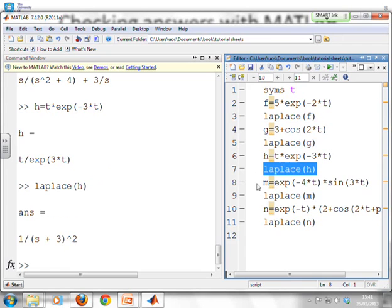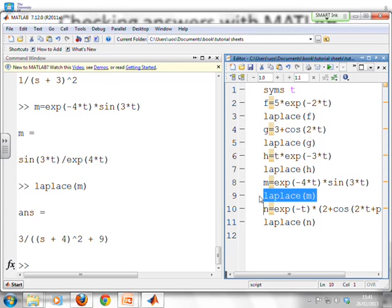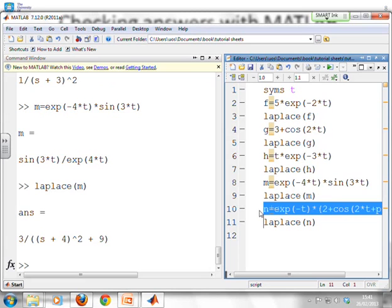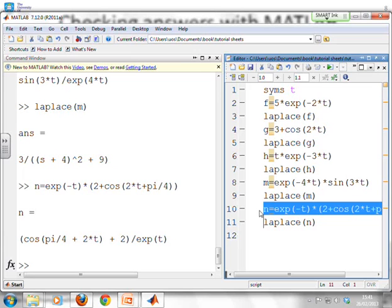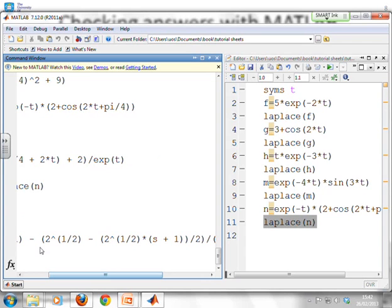What about m? That was e to the minus 4t times sin(3t). There it is. Take Laplace of m. And what do you get? 3 over (s plus 4) all squared plus 9. Exactly as we derived. And the final one, which is a bit messier, but there it is. N equals e to the minus t times (2 plus cos(2t plus pi by 4)). You can enter that. MATLAB's quite happy. Take the Laplace transform of that. And what do you get? It's stretched across the screen a bit, but you'll notice over here I've got my 2 over s plus 1. That goes from the 2 bit in the brackets. And then you'll see I've got this 2 to the half, which is the root 2 type of term you're expected. And these minus is deal with the other bits I had. I'm not going to expand it in detail.